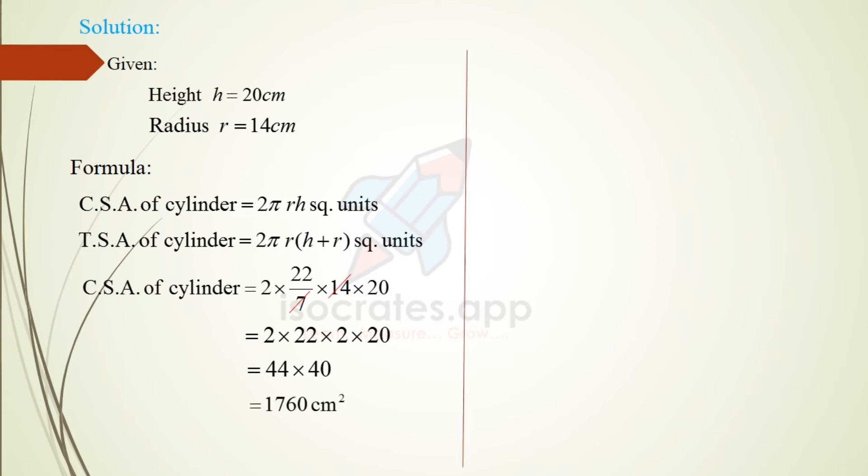Next, total surface area of the cylinder. The formula 2πr(h + r) square units. So 2 into 22 by 7 into 14 into 20 plus 14.